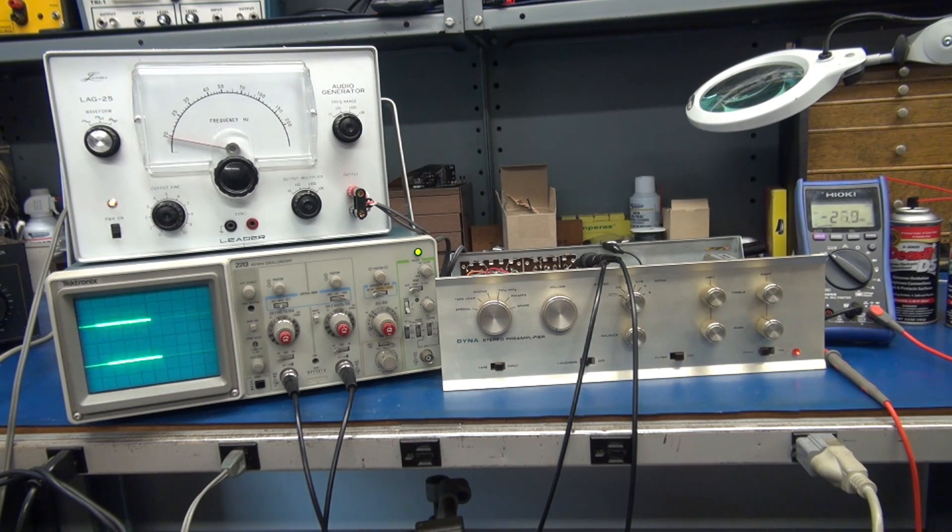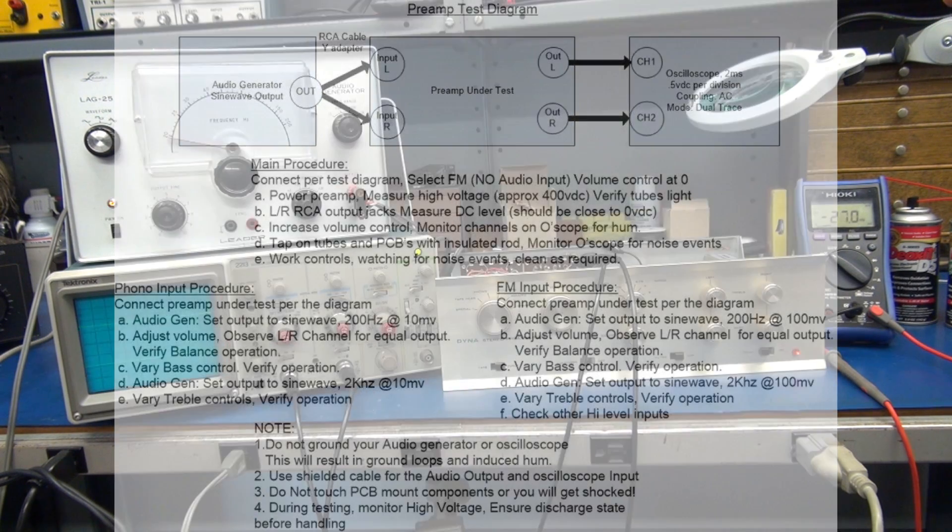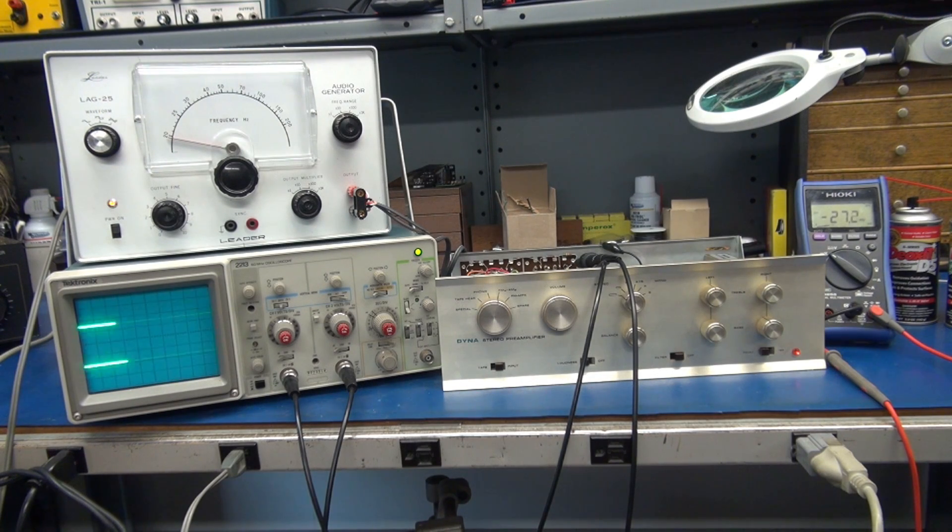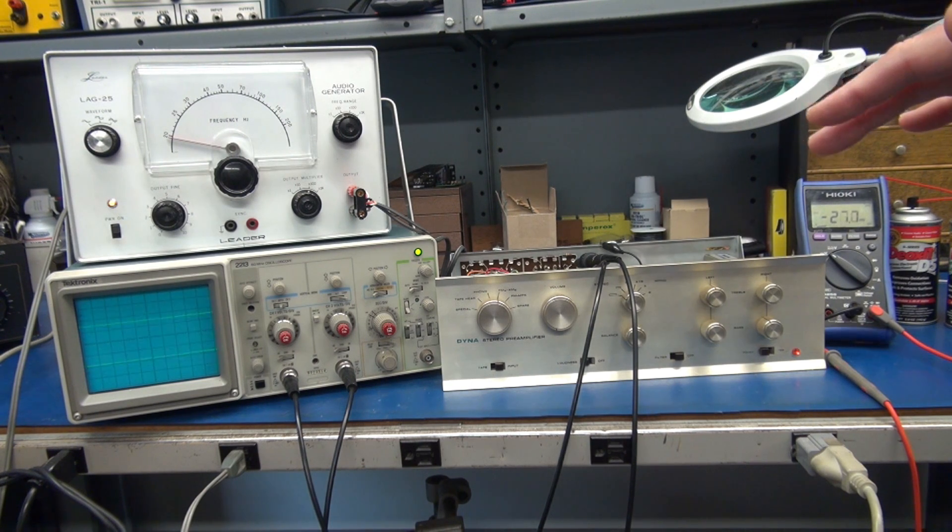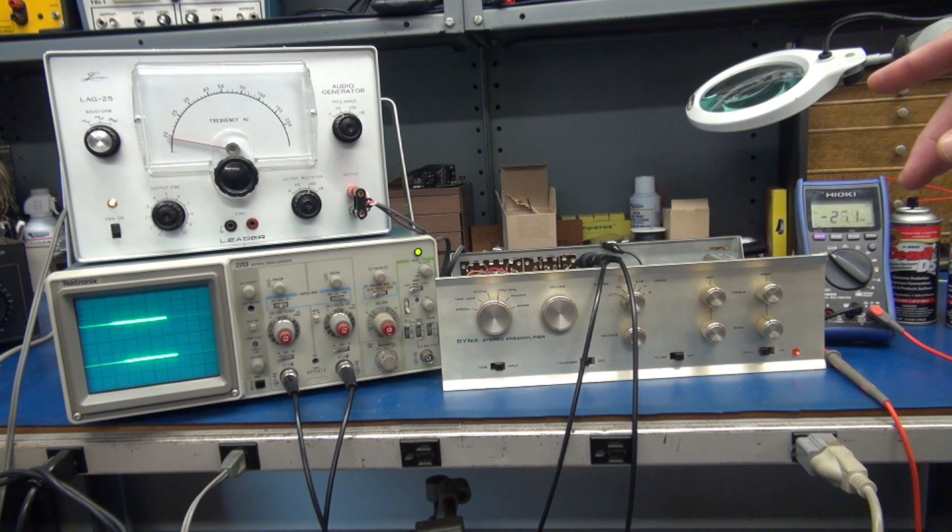We're going to go into the main procedure. First step is to connect up the equipment as shown per the test diagram. Your select switch on the PAS will be at FM. You're going to have no audio input, so turn the output of the generator all the way down, and the volume control on the PAS is also at zero.